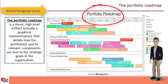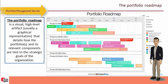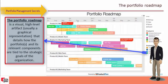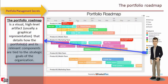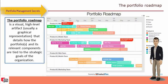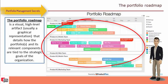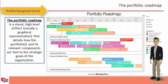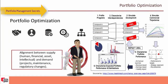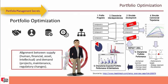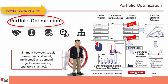The portfolio roadmap is a visual, high-level graphical representation detailing how the portfolio and its components are tied to the strategic goals of the organization. It is a very important visualization board. After determining portfolio components, their interrelations, life cycles, roadmap, and the six performance domains, we move on to portfolio optimization.